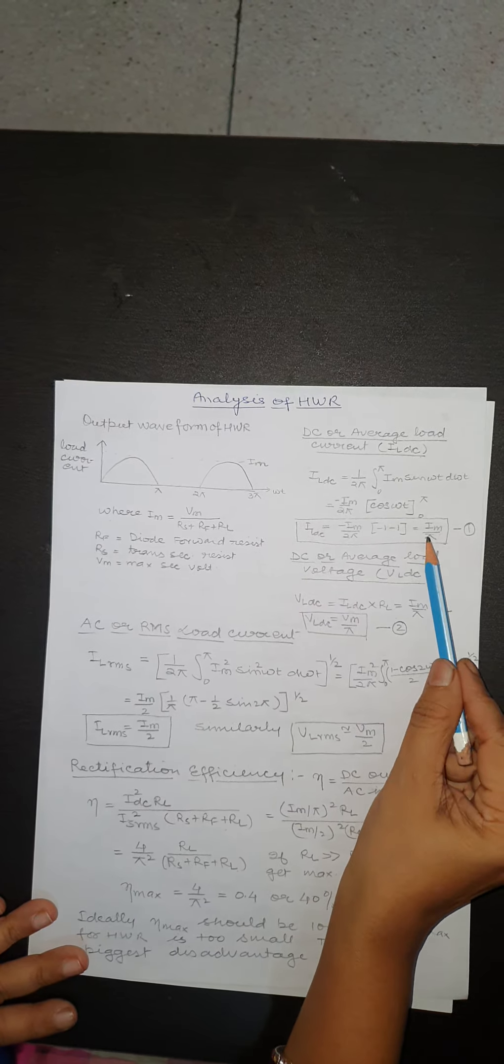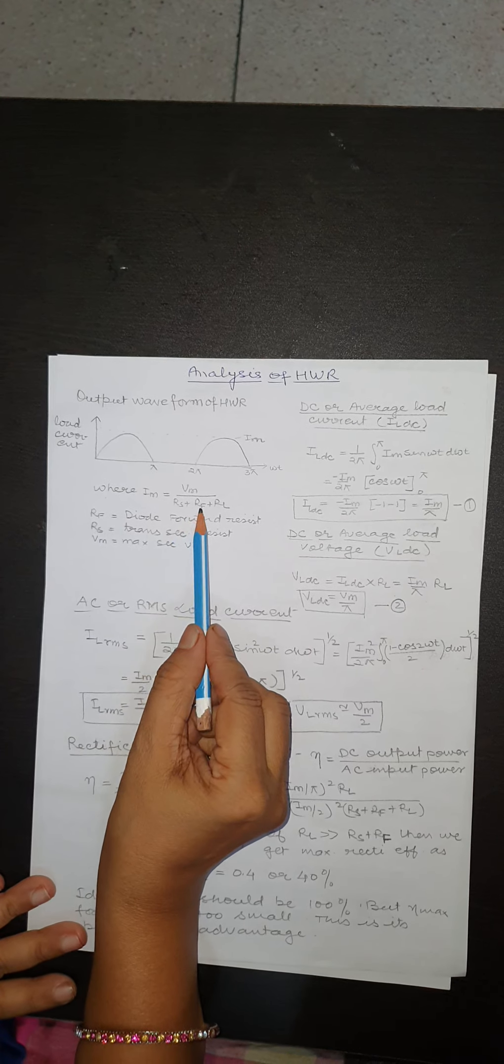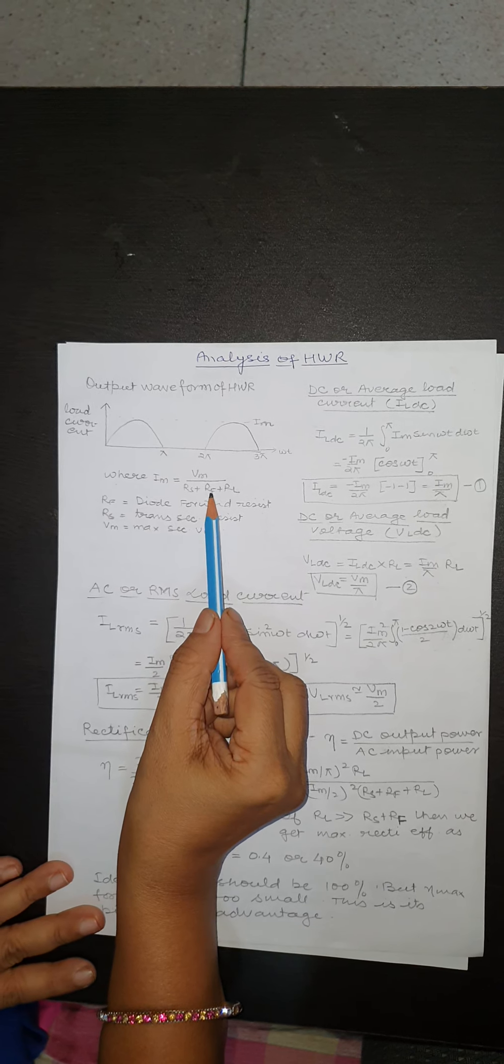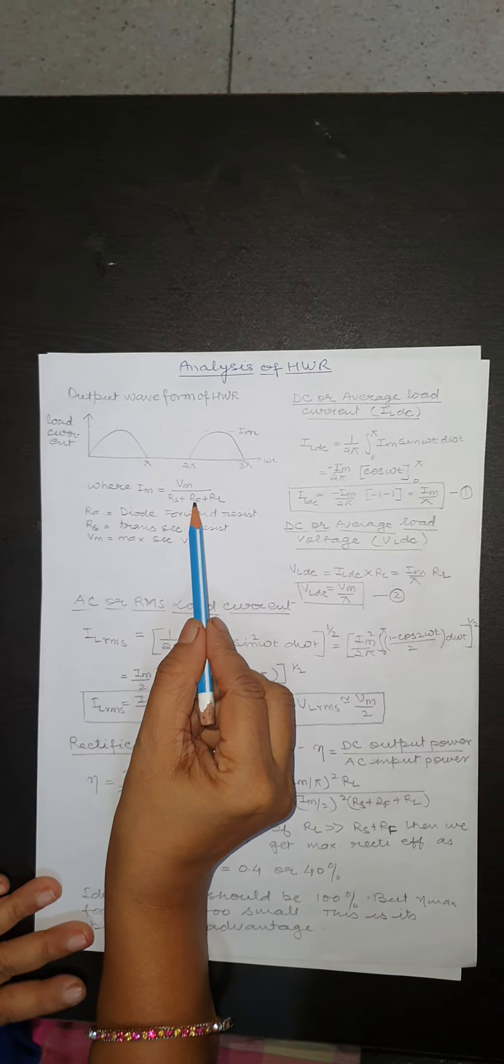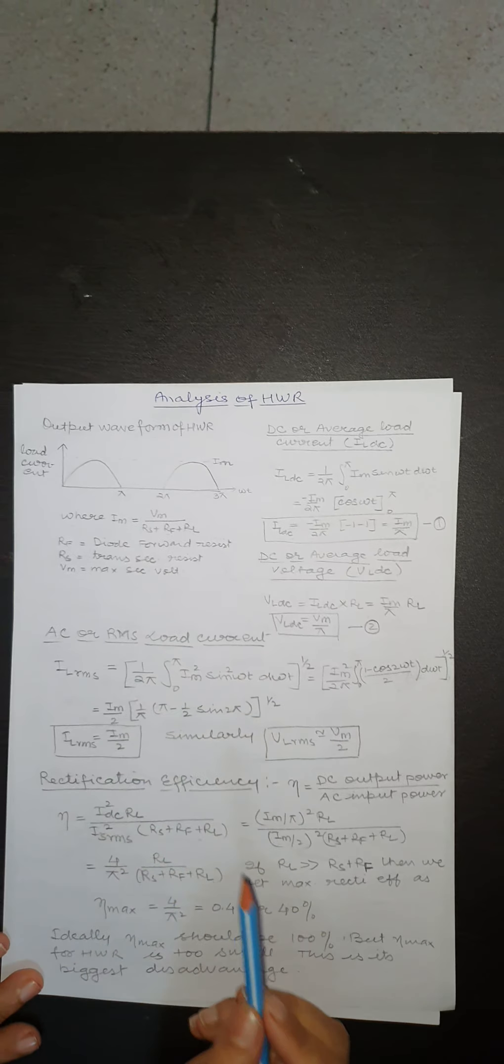By solving this equation we get the value of IL,DC equals Im/π, where Im is given by Vm/(Rs + Rf + RL). So RL is load resistance, Rf is diode forward resistance, and Rs is transformer secondary resistance.